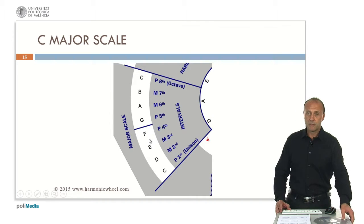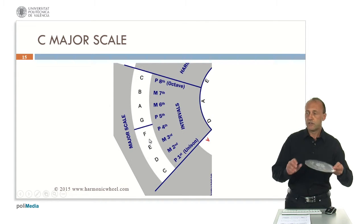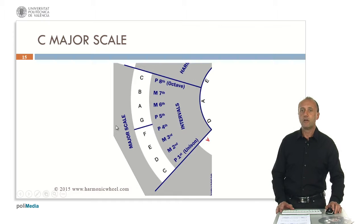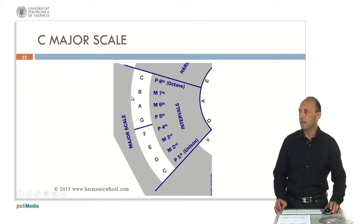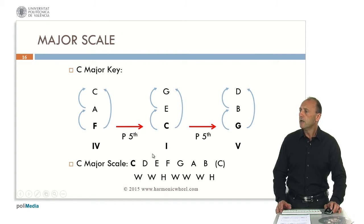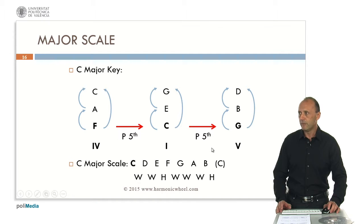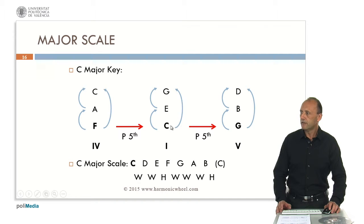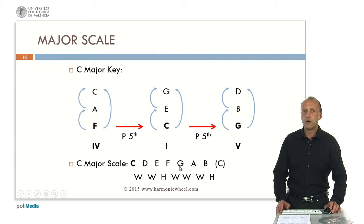The musical abacus, which is this tool I showed several times, gives us all the major scales. For example, here we have the C major scale. We can verify that the three major chords forming the C major key are placed on the first degree, note C, called tonic; the fourth degree, note F, called subdominant; and the fifth degree, note G, called dominant.